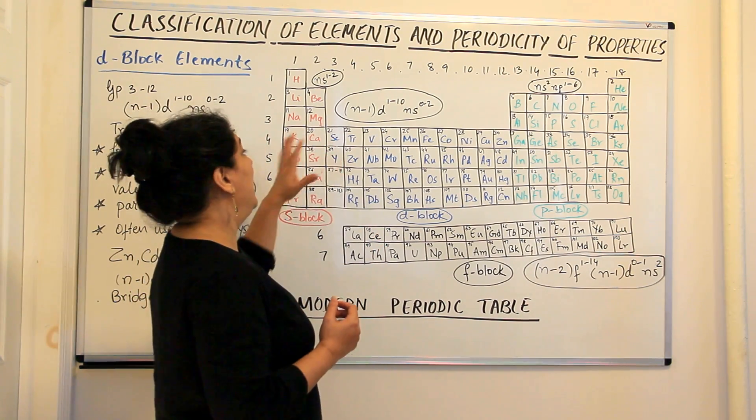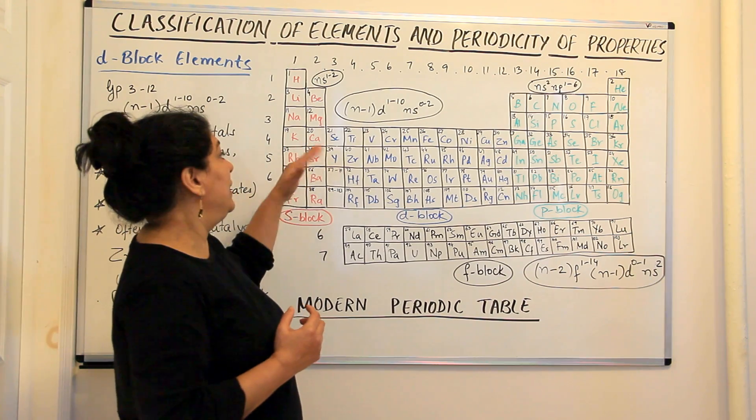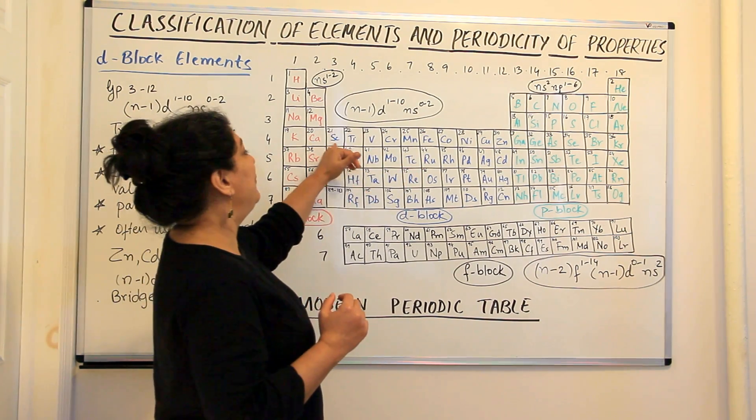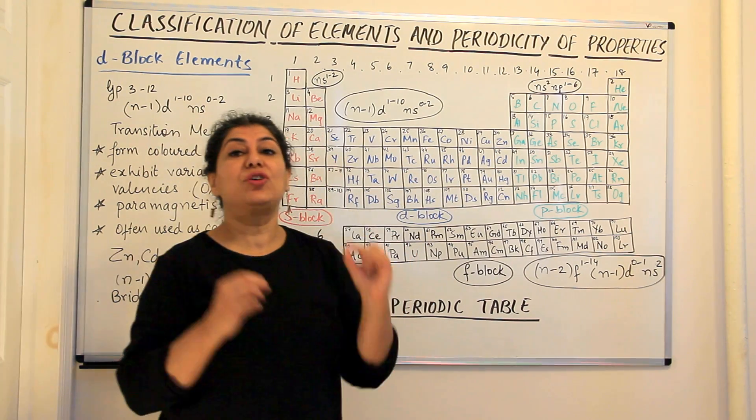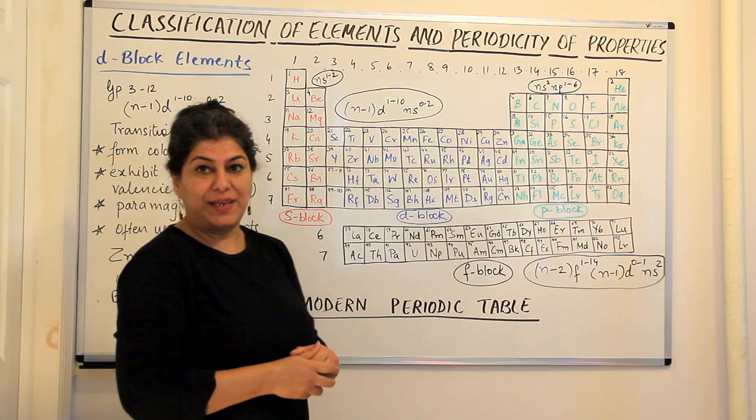They start from the fourth period and the reason for that is that the D orbitals are present in the third shell. Since they are present in the third shell and we know after filling up of the S orbital of the fourth shell, the shell before it would be the third shell. Therefore,